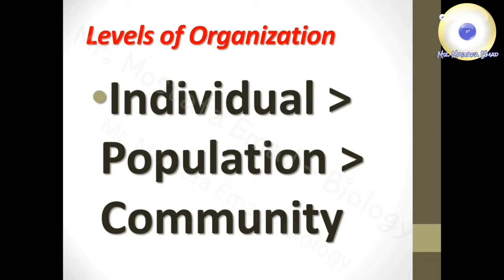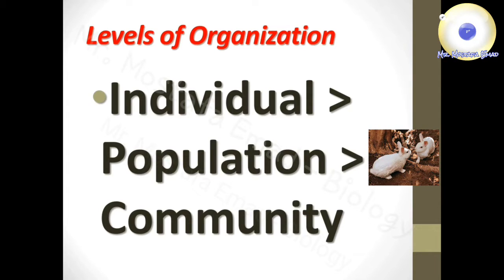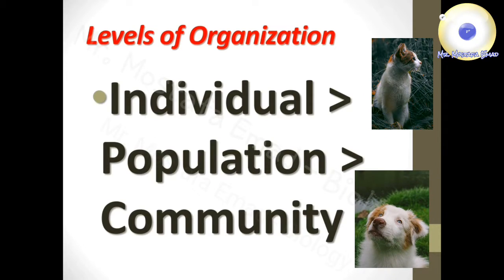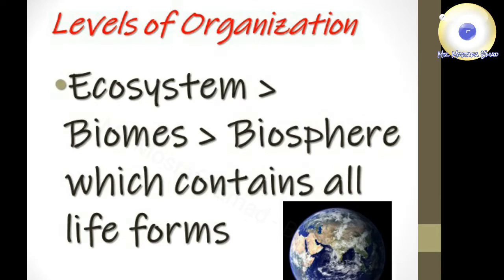An individual is considered a building stone to make a population, which is formed from the same species. Moving to a wider arrangement, a community consists of different animals that live in a certain area. Combining both biotic and abiotic factors together is called an ecosystem. Zooming out further, biomes consist of different areas characterized by their own features, such as deserts and forests. Finally, you reach the biosphere, which contains all life forms.